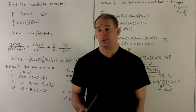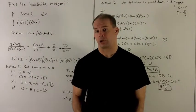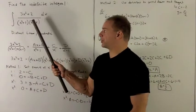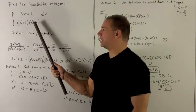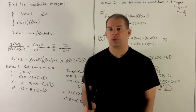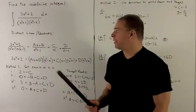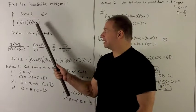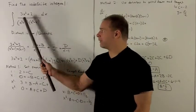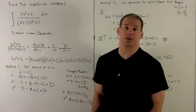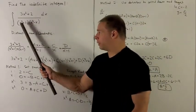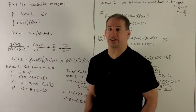Find the indefinite integral using partial fractions of (3x² + 2) / ((x² + 1)(x² - x)) dx. The twist here is that we have distinct linear factors and also quadratic factors that don't factor further over the real numbers. These quadratics appear with power 1, so they'll be distinct.